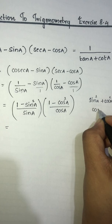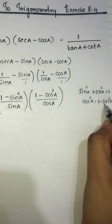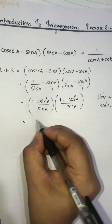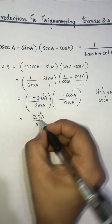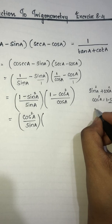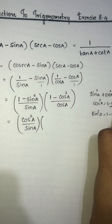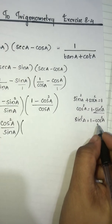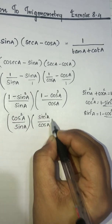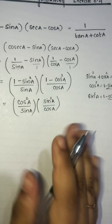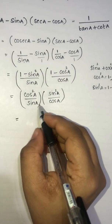Now 1 − cos²A equals sin²A, and 1 − sin²A equals cos²A. So the left side becomes (cos²A/sinA) · (sin²A/cosA), which simplifies further.